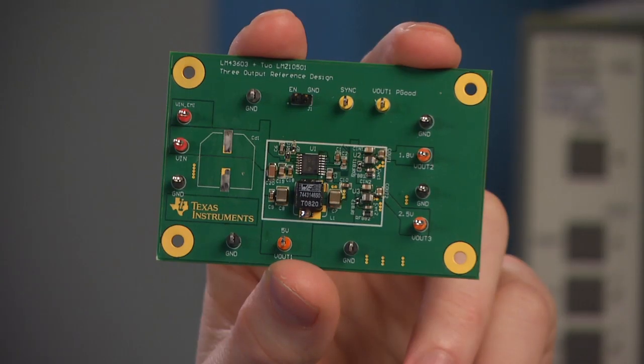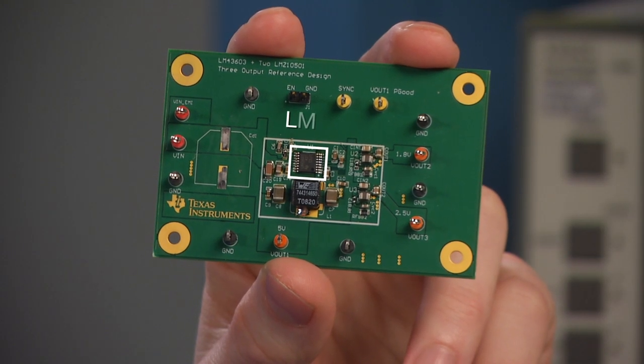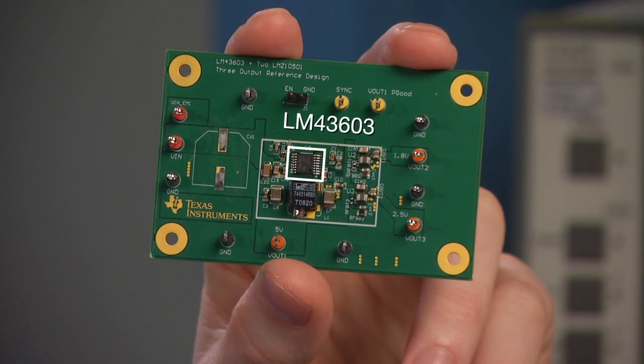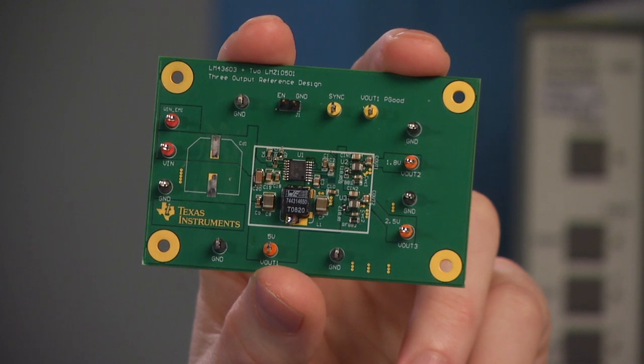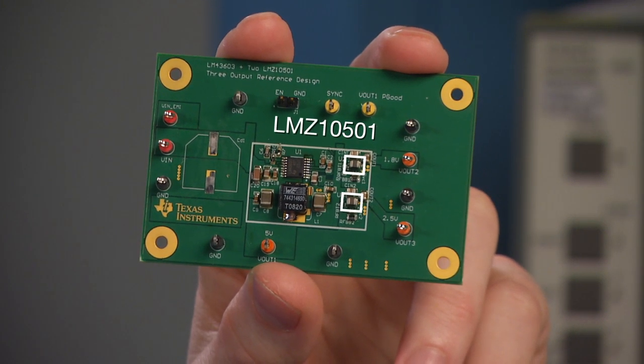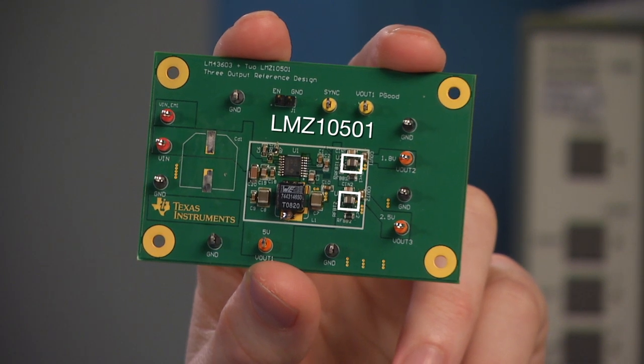Here we have a very tightly laid out triple output power supply design featuring the new LM43603 36-volt, 3-amp synchronous Simple Switcher converter. We also have two LMZ10501 nano modules, which are 5.5-volt, 1-amp switchers with an integrated inductor in a tiny 3-millimeter by 3-millimeter package.